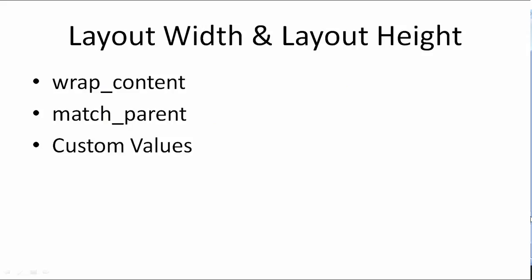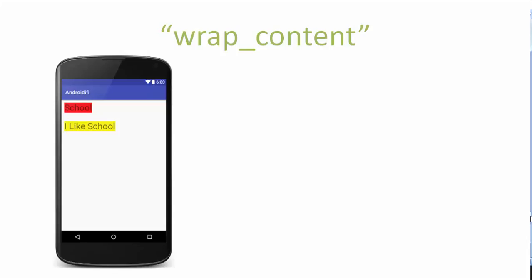There can be three different values for layout_width and layout_height: 1. Wrap content. 2. Match parent. 3. Custom values. Let's start with wrap content. If you assign wrap content as the value, the view's boundaries will wrap its content. Let's say you have a text view that says 'school' — if you add more text in the XML, like 'I like school', then its boundaries will grow larger to wrap the larger text.